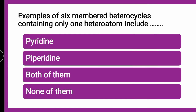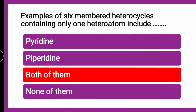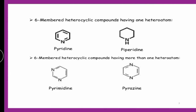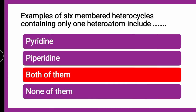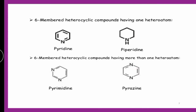The next question is — examples of 6-membered heterocycles containing only one heteroatom include dash. Whether it is pyridine, whether it is piperidine, whether both of them, or none of them. The correct answer is both of them. 6-membered heterocycles which contain only one heteroatom include both pyridine as well as piperidine. Pyridine contains only nitrogen and piperidine, which is the saturated form of pyridine, also contains only one heteroatom.